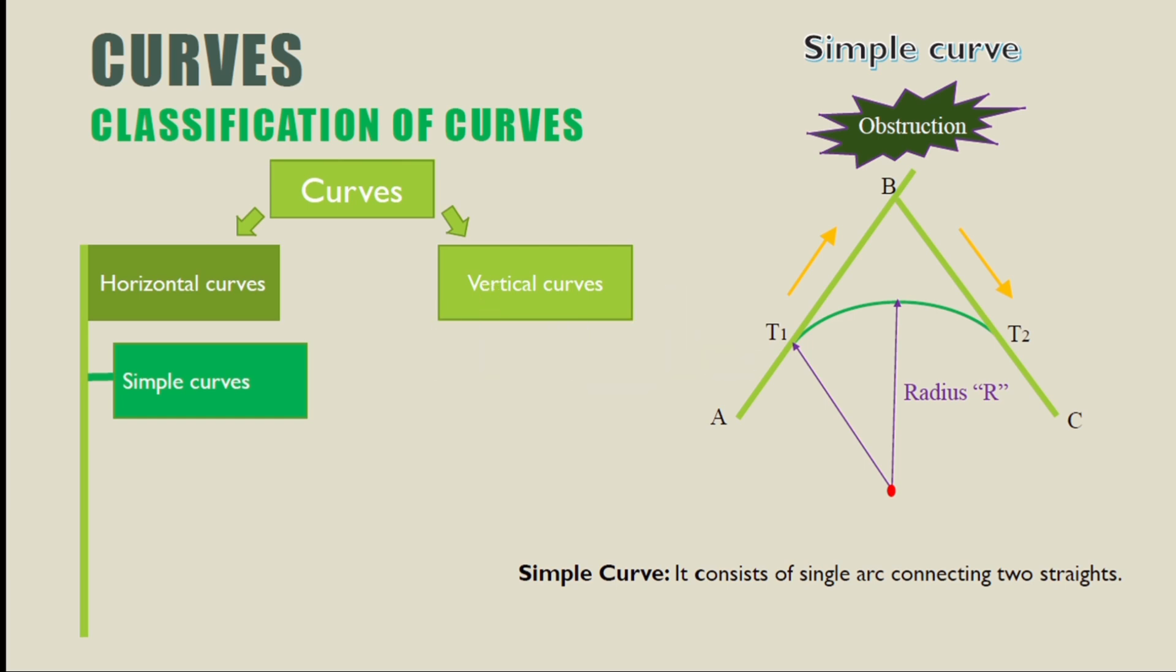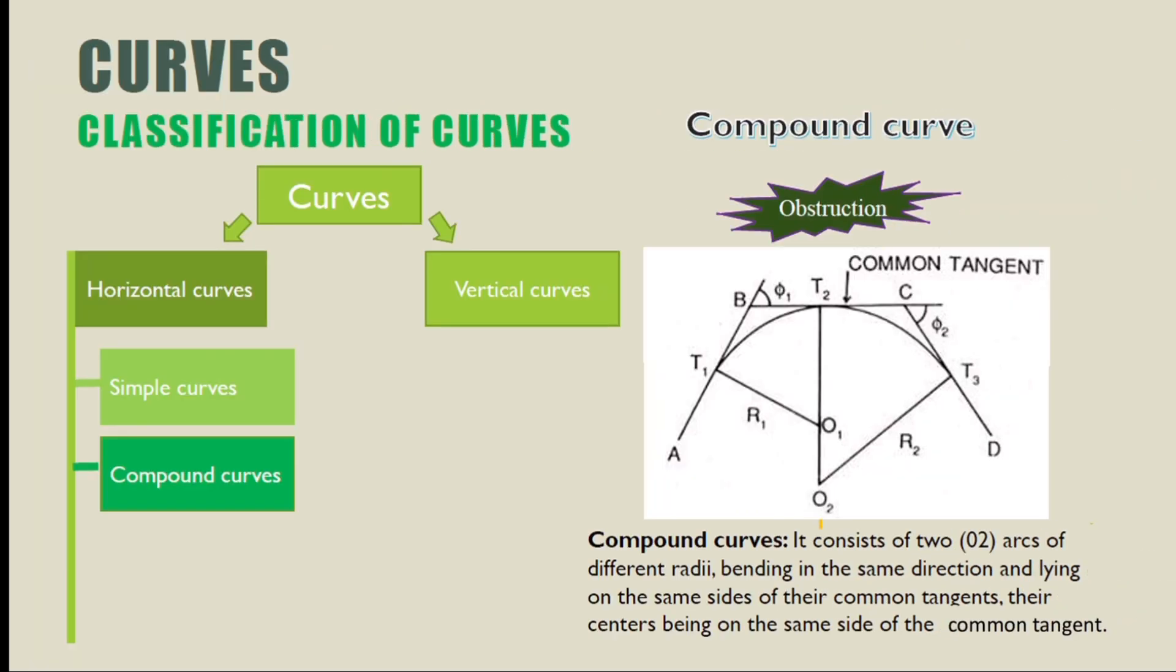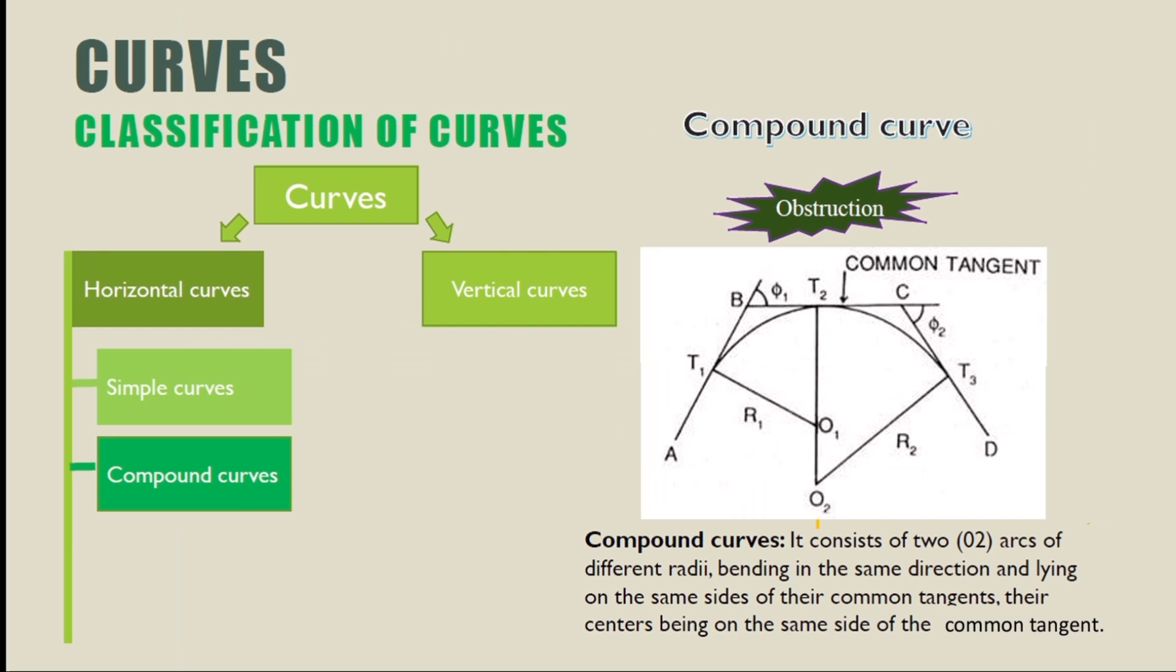Compound curve consists of two arcs of different radii bending in the same direction and lying on the same side of the common tangent, their centers being on the same side of common tangent.